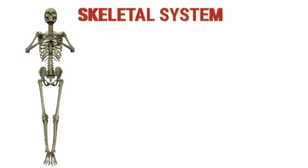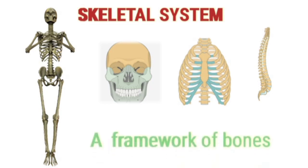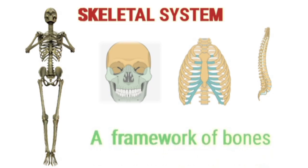Let's discuss the skeletal system. Children, look at this image — this is a skeleton. Our body has different types of bones in it. Our body is built around a hard and strong framework of bones called the skeletal system. The adult human body has 206 bones. The skeletal system is very important because it protects the internal organs.